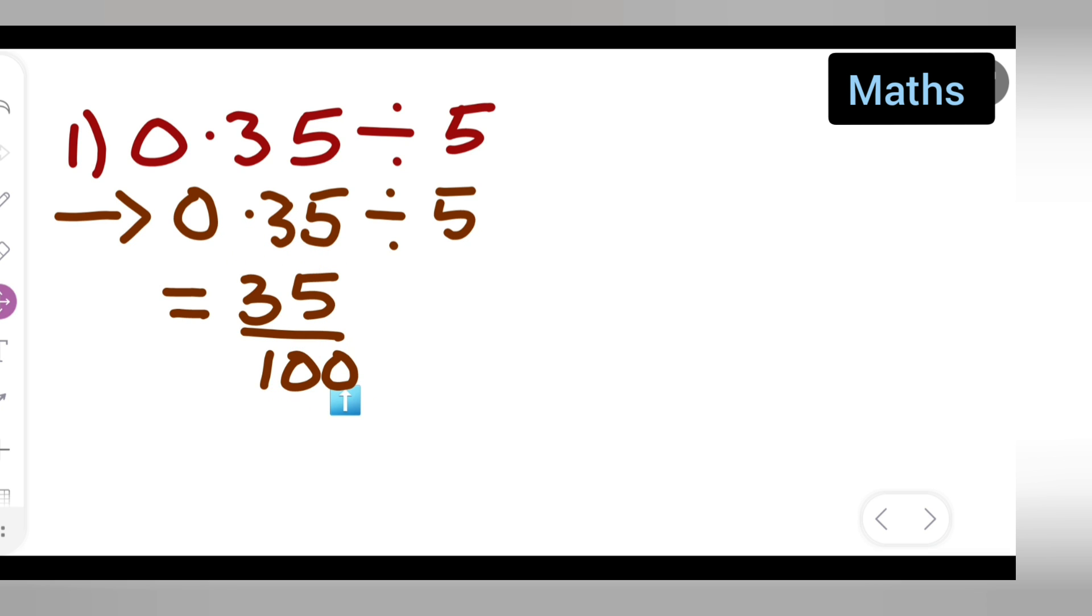Basically this is equal to 35, and I'm going to divide this upon 100. Write down upon 100. This is equal to multiply this. Since I'm dividing by 5, multiply it with the reciprocal of 5, so 1 upon 5.